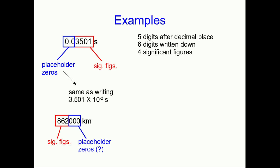Here's another example, this 862,000 kilometers. So the eight, six, and two are certainly sig figs. What about the zeros? Are those placeholder zeros?